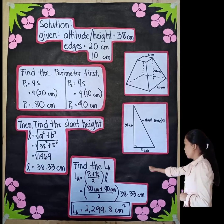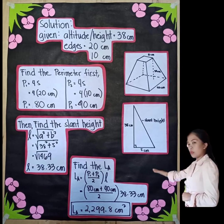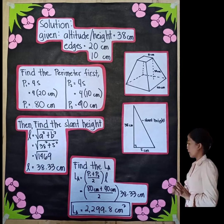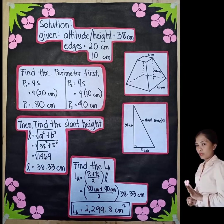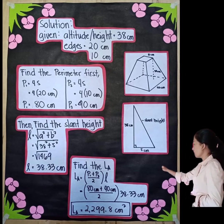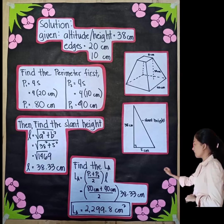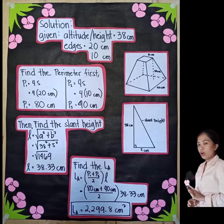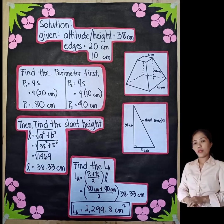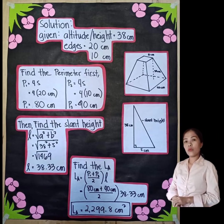P1 = 4s = 4 × 20 cm = 80 cm. Then for the other base: P2 = 4s = 4 × 10 cm = 40 cm.